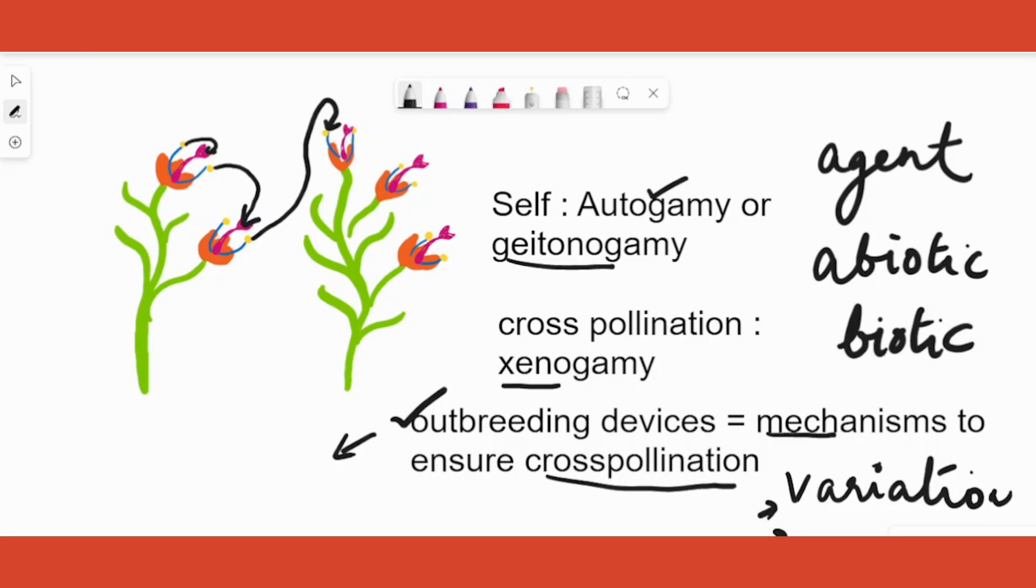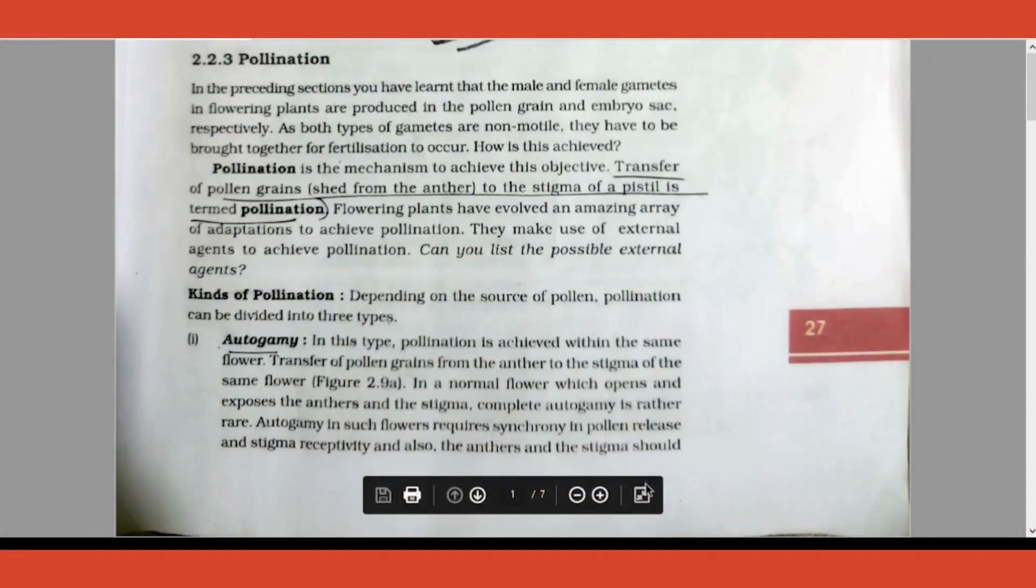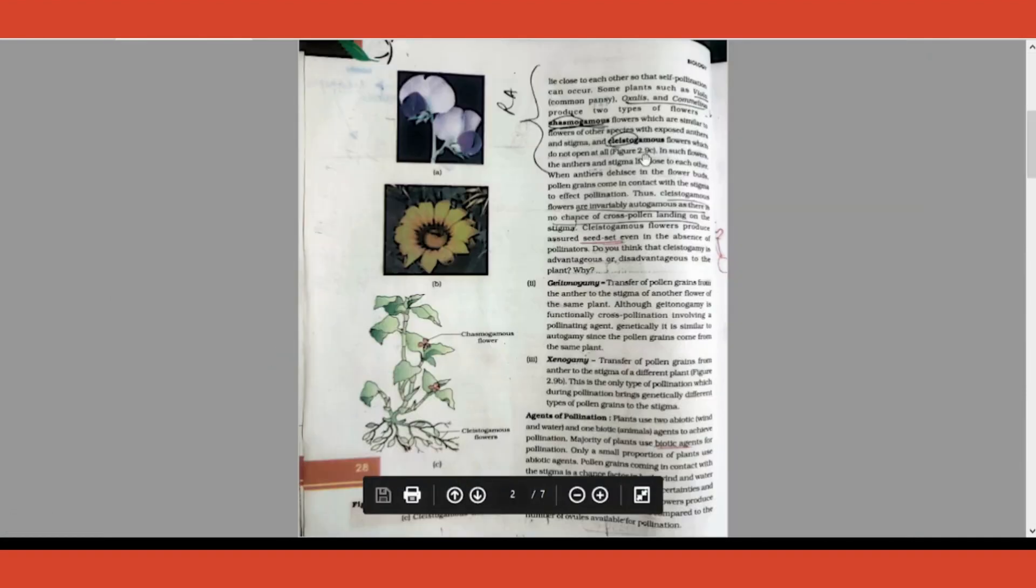We'll be quickly covering up from the PDF of the textbook. I have marked important things. Let's go there right now. From your textbook you should know the definition of pollination, which I already explained. The three types also you should definitely know: autogamy, geitonogamy, and xenogamy.